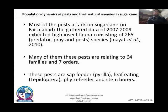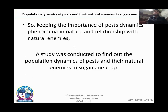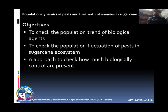Many factors affect sugarcane yield loss, but pests are the most important. 265 species of pests affect sugarcane, related to 64 families and several orders. These pests are sap-feeders, leaf-eating, phytofeeders, and stem borers. Agro-ecosystems are dynamic in nature, and keeping in mind the importance of pest dynamics and their relationship with natural enemies, a study was conducted on population dynamics of pests and their natural enemies in sugarcane crop. The objectives include studying population trends of biological agents, checking population fluctuation of pests, and assessing the level of biological control present.